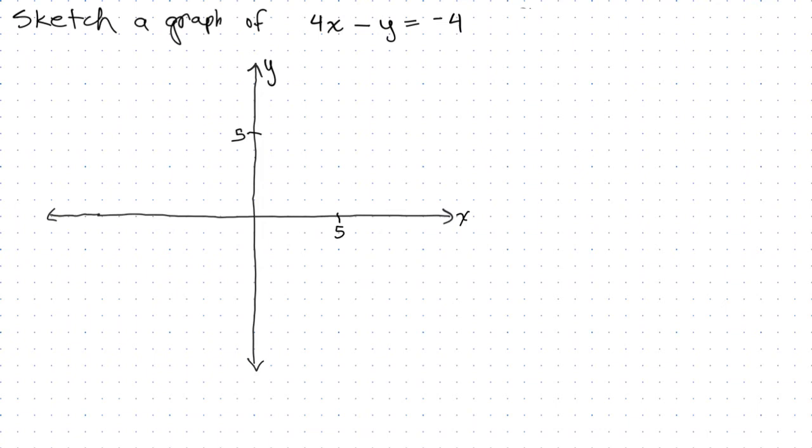All right, we're going to sketch a graph of 4x - y = -4. That's a line, and the easiest way to do this one is probably using the x and y intercept method.